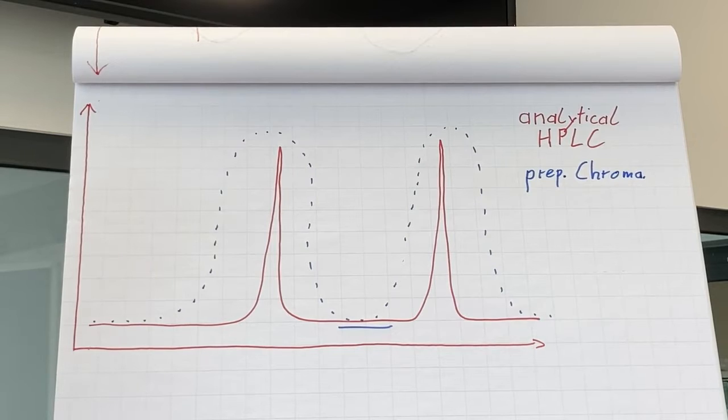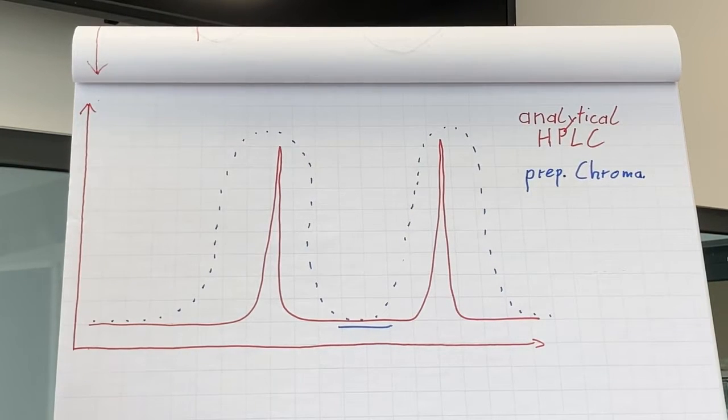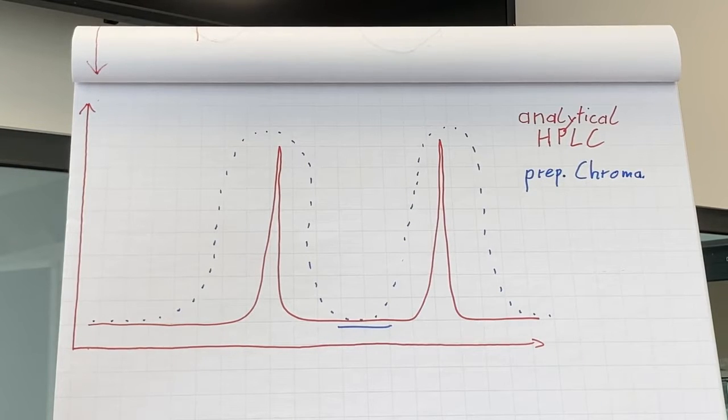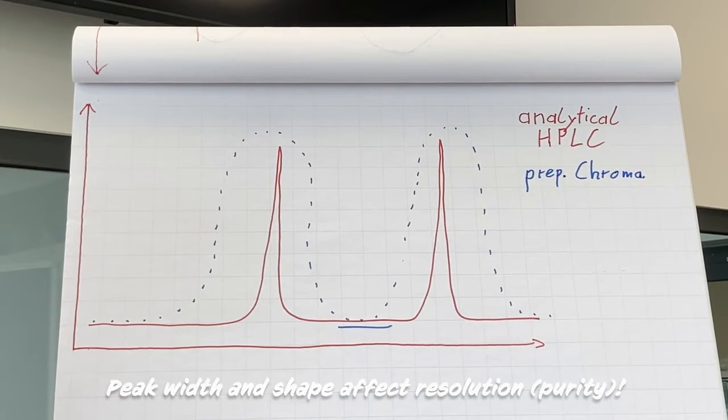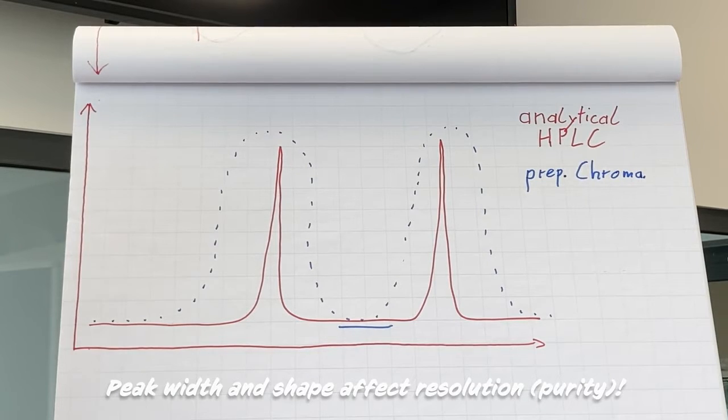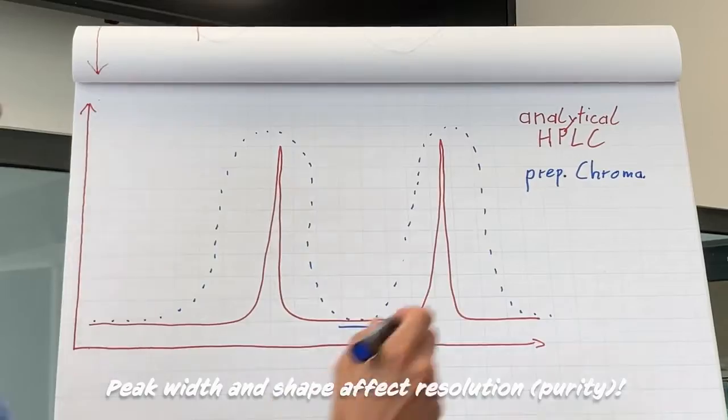The peak shape besides the peak width is also very important. When you work with preparative chromatography, you want to purify as much sample as possible. The peak shape plays a decisive role because it has a high effect on the purity of the collected sample. So obviously, we are interested in ideal peak shapes.